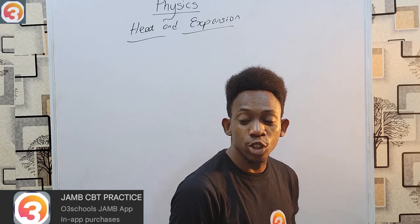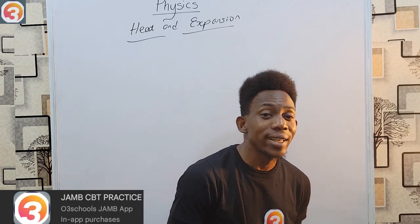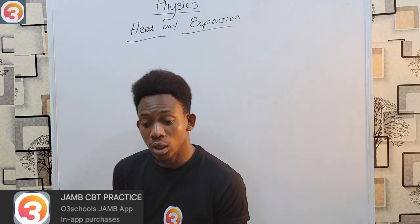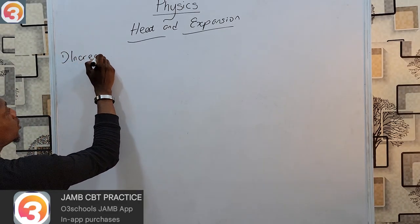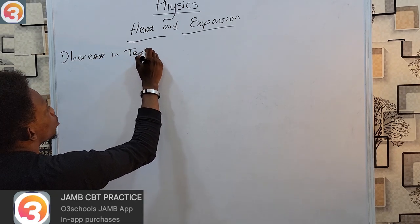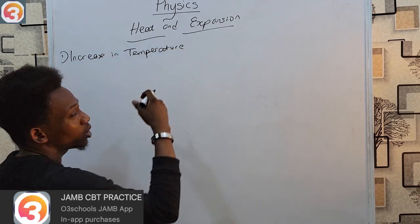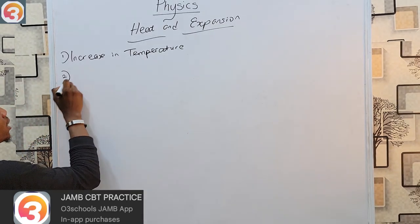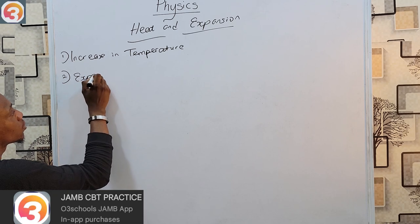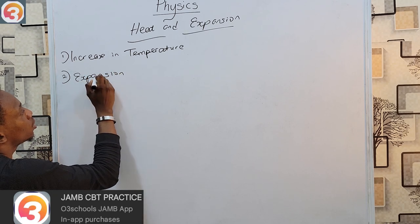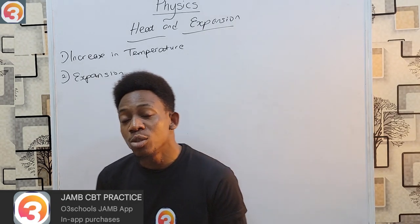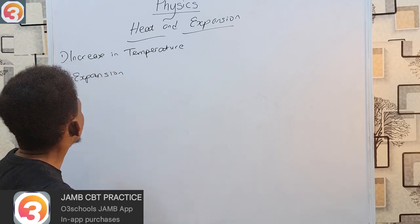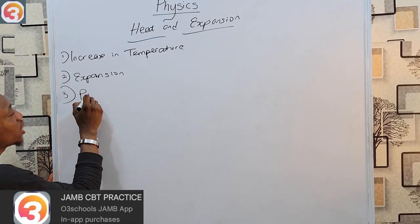Heat is simply a form of energy which travels from one object to another due to a temperature difference between the two objects. Once heat flows from a body, one consequence is an increase in temperature — the body gaining heat has its temperature rise while the body losing heat has its temperature reduce. Another effect is expansion: the addition of heat makes a body increase in physical dimensions, while removal of heat decreases size. Heat can also cause change in physical properties.